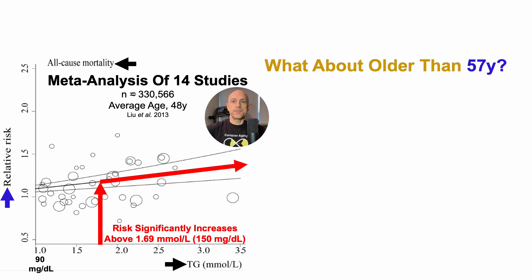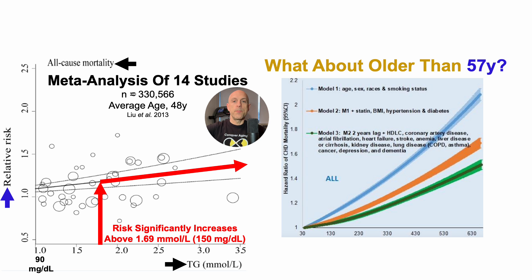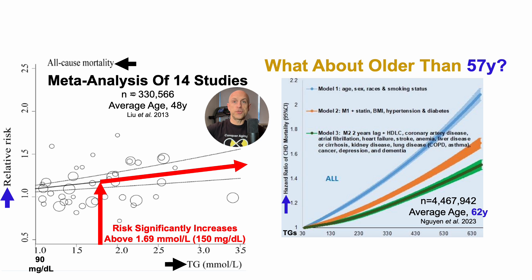So what about older than 57 years? This isn't a plot of all-cause mortality risk, but it is the hazard ratio for coronary heart disease mortality — heart disease mortality risk plotted against circulating levels of triglycerides in milligrams per deciliter on the x-axis. In this study, which included almost 4.5 million people — and note that all of these studies will be in the video's description — once triglycerides got above 80 milligrams per deciliter, looking at the fully adjusted model, the data in green, model 3, there was a significantly increased coronary heart disease mortality risk.